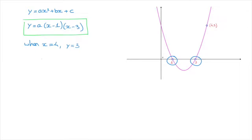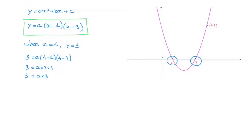That leads to three equals a times (four minus one) times (four minus three). That's three equals a times three times one, which is three equals a times three. Dividing both sides by three gives three over three equals a, in other words one equals a, or simply a equals one. We now know the value of the coefficient a.